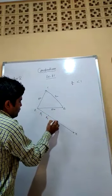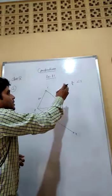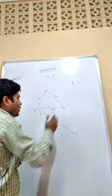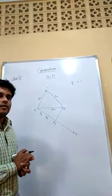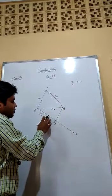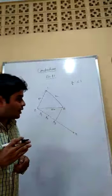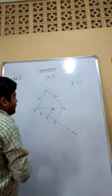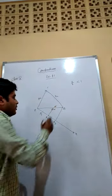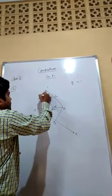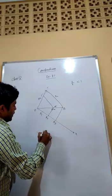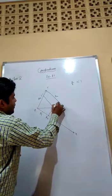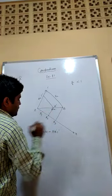Mark points A1, A2, A3 on the line. Since the scale factor is less than 1, the new triangle should be inside the given triangle. For this, join A3 to B. Then through A2, draw a line parallel to A3B — this gives point A'. Again, passing through A', draw a line parallel to BC — this gives point C'. Therefore, triangle ABC is similar to triangle A'B'C'.